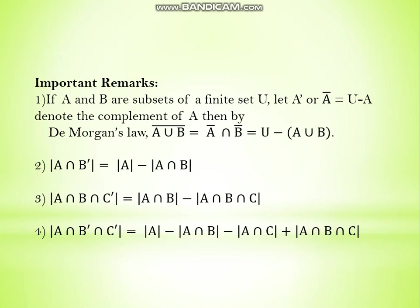Before the example, we have important remarks about De Morgan's Law. If A and B are subsets of a finite universal set U, then A complement is the set of elements not in A. De Morgan's Law states that (A∪B) complement equals A complement ∩ B complement. Using inclusion-exclusion, A∩B complement contains elements in A but not in B, so we subtract the common part A∩B from A.